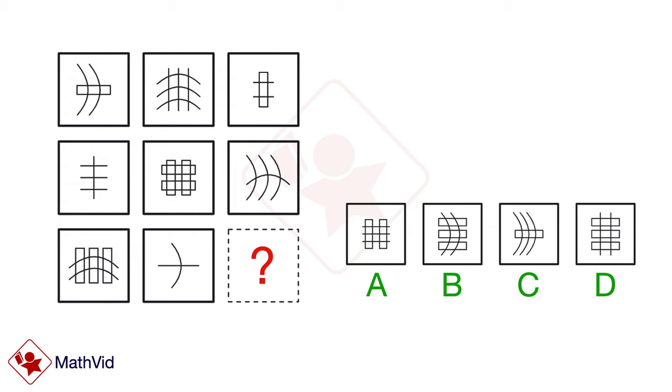Look at each column. They have four shapes with different parts. They have four boxes, four lines, and four curves. So what should we put in the empty spot to match the column? We need a shape that has three boxes and two lines.